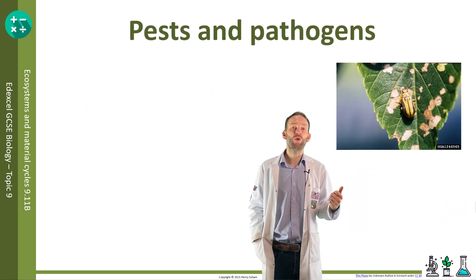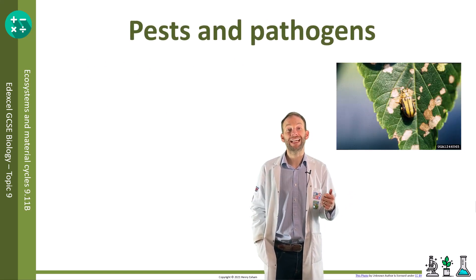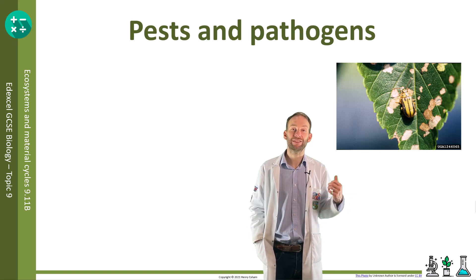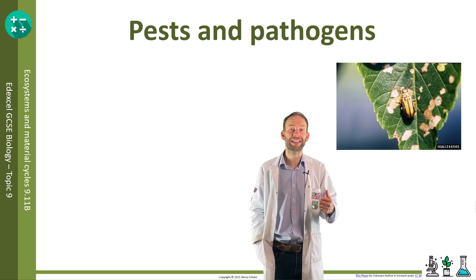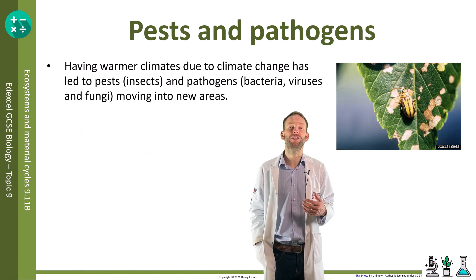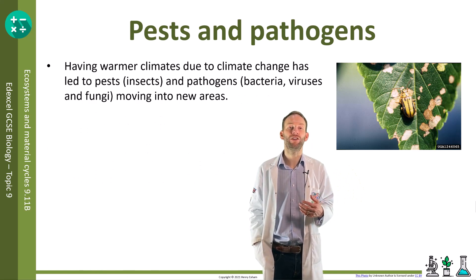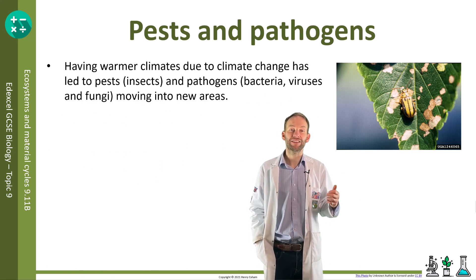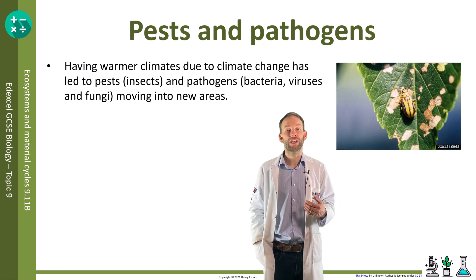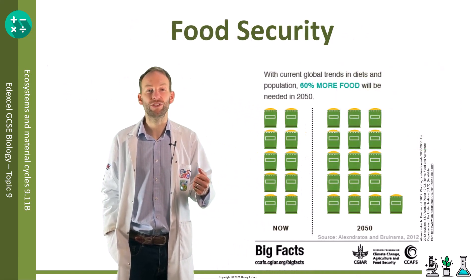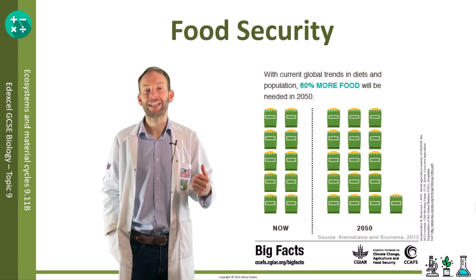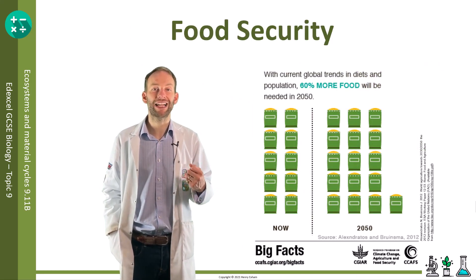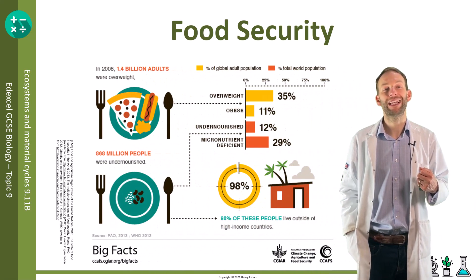Warmer climates due to climate change have led to pests such as insects, and pathogens such as bacteria, viruses, and fungi, moving into new areas where they weren't previously found. This has destroyed crops, reduced livestock yields, and therefore affected food security. All these issues mean that food security is becoming a serious challenge for the human population.